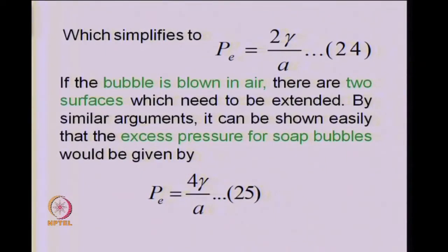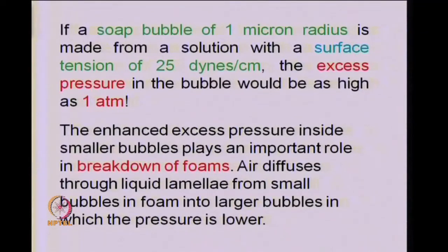Like in the case of vapour pressures, you should be able to obtain a feel for the magnitudes of excess pressures by plugging in numbers for surface tension and different radii. To give an example: if a soap bubble of 1 micron radius is created from an aqueous solution with typical surface tension of 25 dynes per centimeter, the excess pressure works out to about 1 atmosphere.